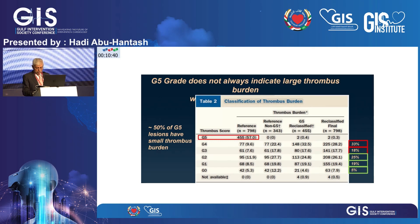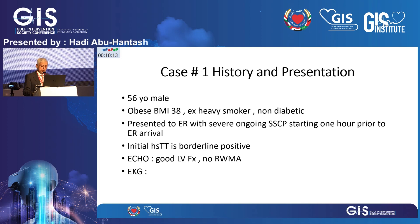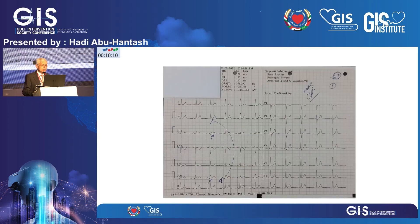Let me start with the first case: a 56-year-old male, obese with a BMI of 38, ex-heavy smoker, non-diabetic, presenting to the ER with severe ongoing sub-sternal chest pain starting one hour prior to arrival. Initial high-sensitivity troponin was borderline positive and the echo showed good LV function without regional wall motion abnormality. The initial ECG showed some ST elevation in the inferior leads — not remarkable but present — so it's an ST elevation myocardial infarction.